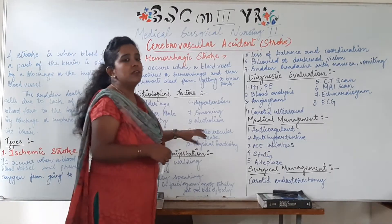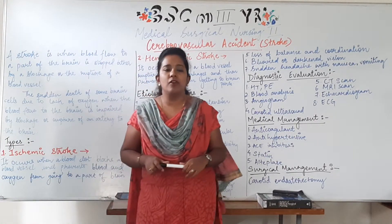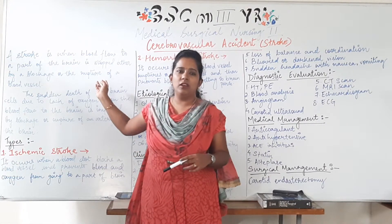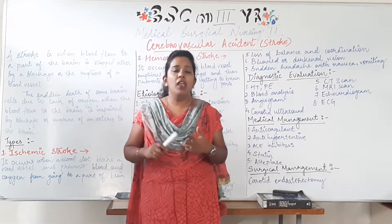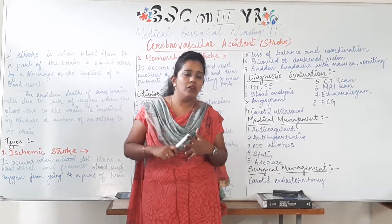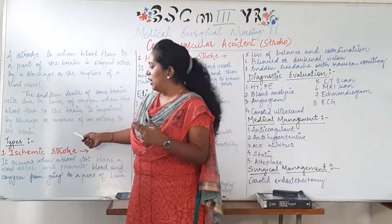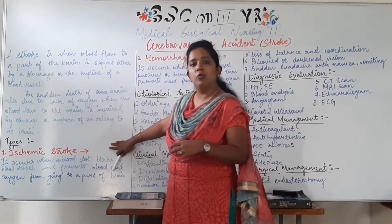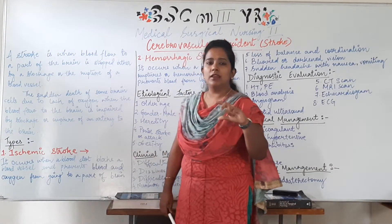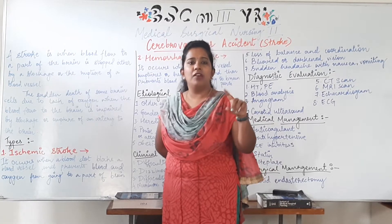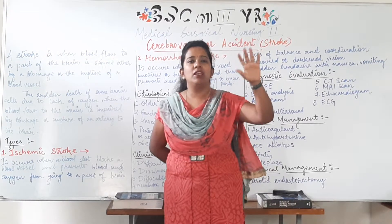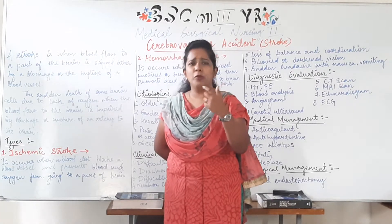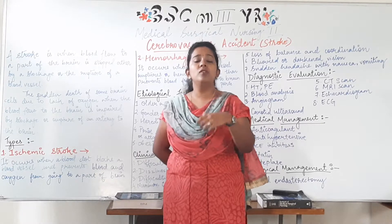Now we'll discuss the types of Cerebrovascular Accident. As established in the definition, CVA can occur due to two reasons: one can be a clot, and the second can be hemorrhage. The first is called Ischemic Stroke and the second is Hemorrhagic Stroke.